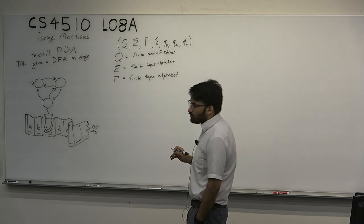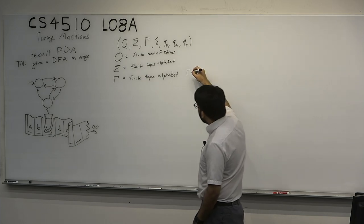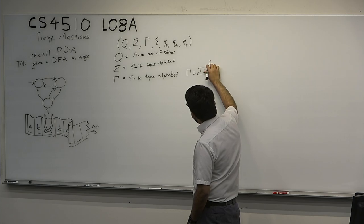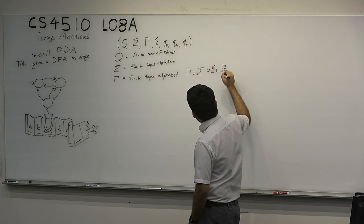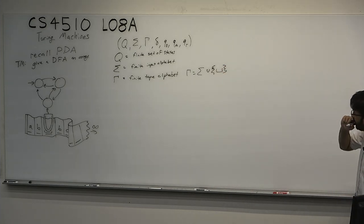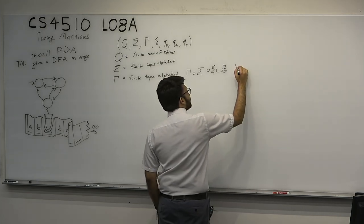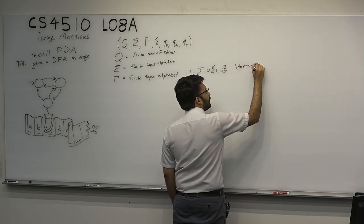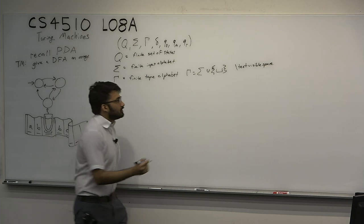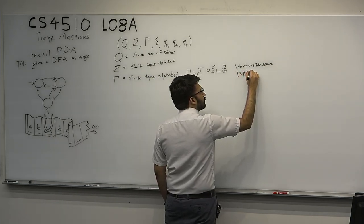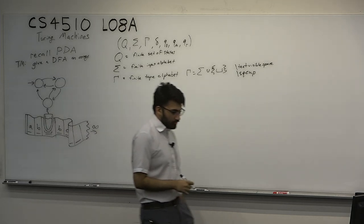We have a convention for the tape alphabet, where we usually take Γ to be Σ union this special symbol we call a blank. We use the blank to differentiate from an underline — in LaTeX it's something like a visible space or square cup. We'll talk about the importance of the blank as well for the machine's initialization.